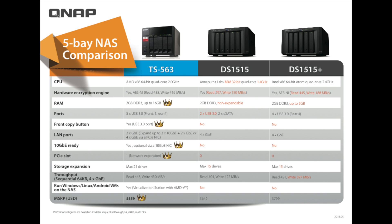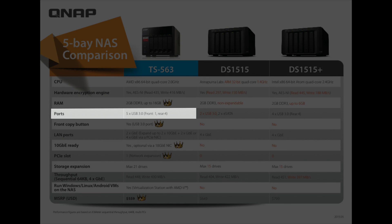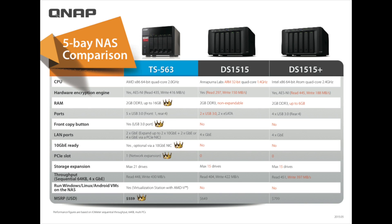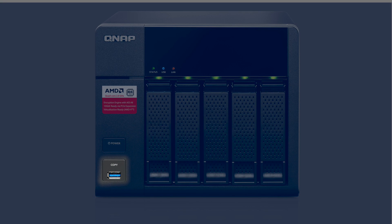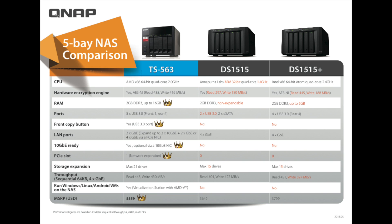Next are the ports on each of the systems. The QNAP TS-563 comes with five USB 3.0 ports — four in the back and one in the front. The DS-1515 comes with two USB 3.0s and two eSATAs, located in the back of the unit. The DS-1515+ comes with four USB 3.0 ports located in the back. Also unique to the TS-563 is a front copy button, which you can utilize as an export function — the other two units do not have this.